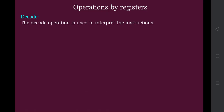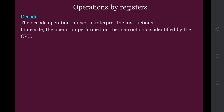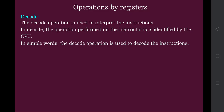The decode operation converts high-level language into low-level language. It interprets the instruction input by the user, translating it from high-level language to low-level language so the system can perform operations, since the system can only understand machine-level language. In decode, the operation to be performed on the instructions is identified by the CPU. In simple words, the decode operation is used to decode the instructions into machine language, which is a string of zeros and ones.